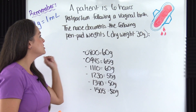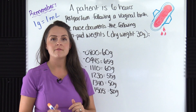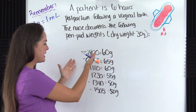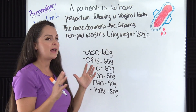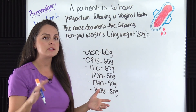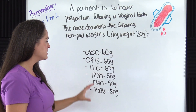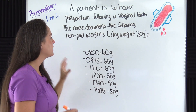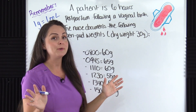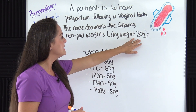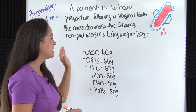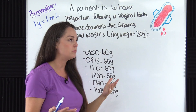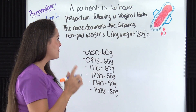This next problem says a patient is six hours postpartum following a vaginal birth. The nurse documents the following peripad weights. Here we have the hours and beside each is the actual weight of the peripads during that specific hour. The problem tells us the dry weight of the peripad, because we're going to take the wet weight and subtract the dry weight to get our estimated blood loss. Our magic number is 30 — that is the dry weight of each peripad in grams.